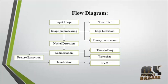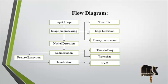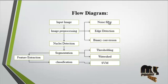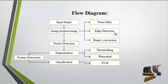Now we discuss about the flow diagram. First, the input image is taken from the dataset. Then image preprocessing is carried out, which involves three major steps: noise filtering, edge detection, and binary conversion. In noise filtering, we remove the noise from the dataset image using a median filter. Then edge detection is carried out using the Canny edge filter method.